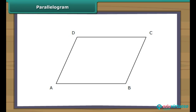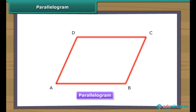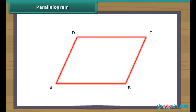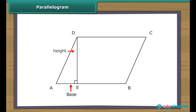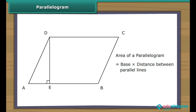Parallelogram. Students, see the following figure. Can you name the figure? It is a parallelogram. A parallelogram is a four-sided closed figure having opposite sides parallel to each other. Can we find the area of this figure? Yes, by using the formula for the area of a parallelogram. For this, you require the measures of the base and the distance between the corresponding parallel sides. The area of a parallelogram is the product of its base and the distance between the parallel sides, that is, the height of the parallelogram.